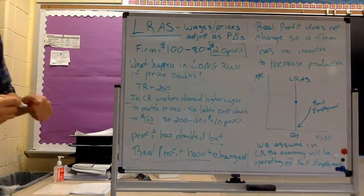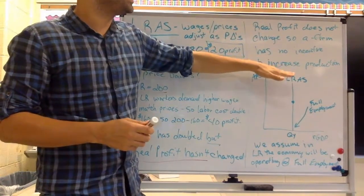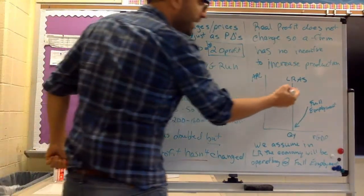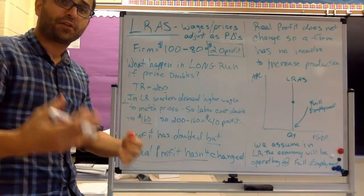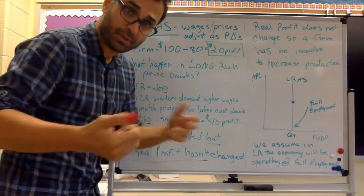So what does that mean? If real profit doesn't change, a firm has no incentive to increase production. So in that case, you see that the long run aggregate supply is vertical. This is the first curve we've seen that's vertical. In micro, we see lots of vertical curves. We've been used to this. But we didn't do micro this year.